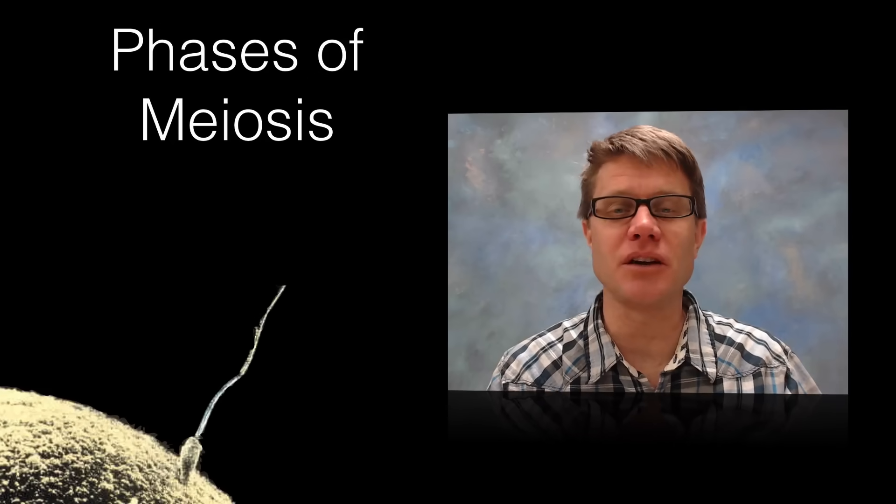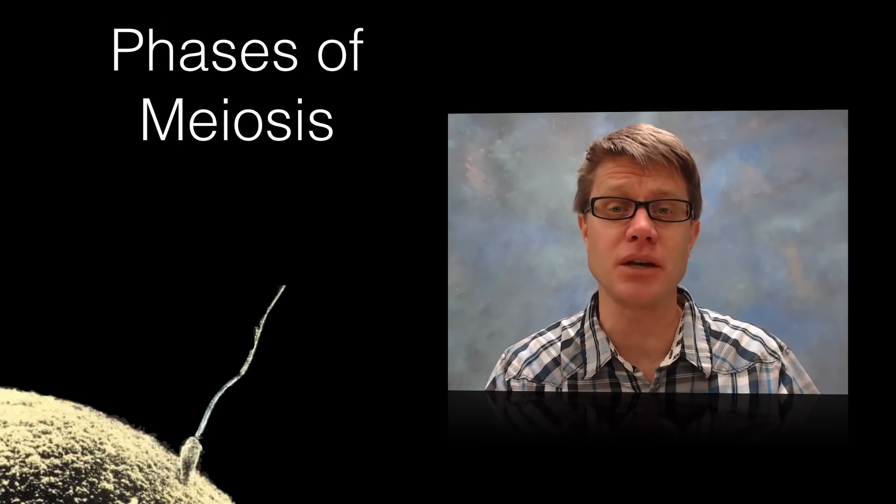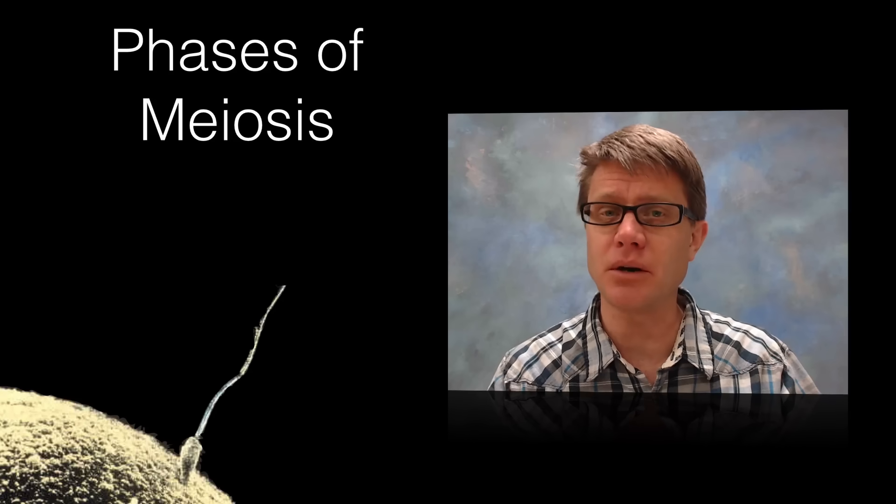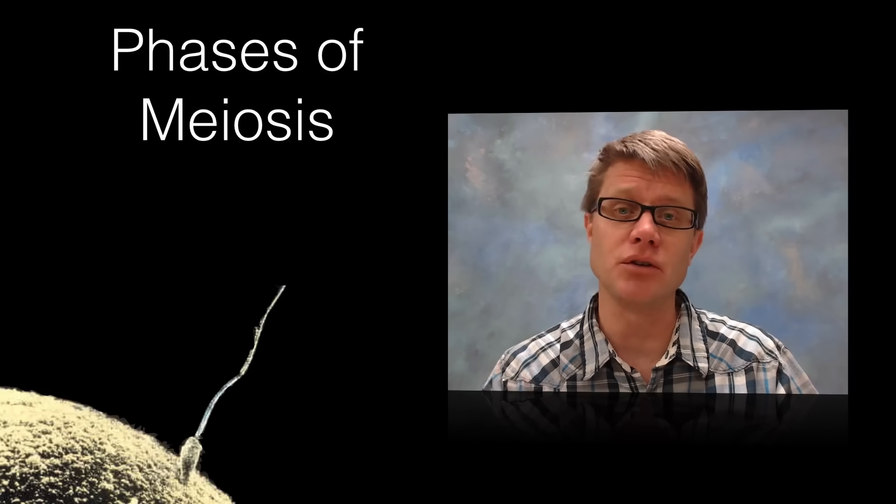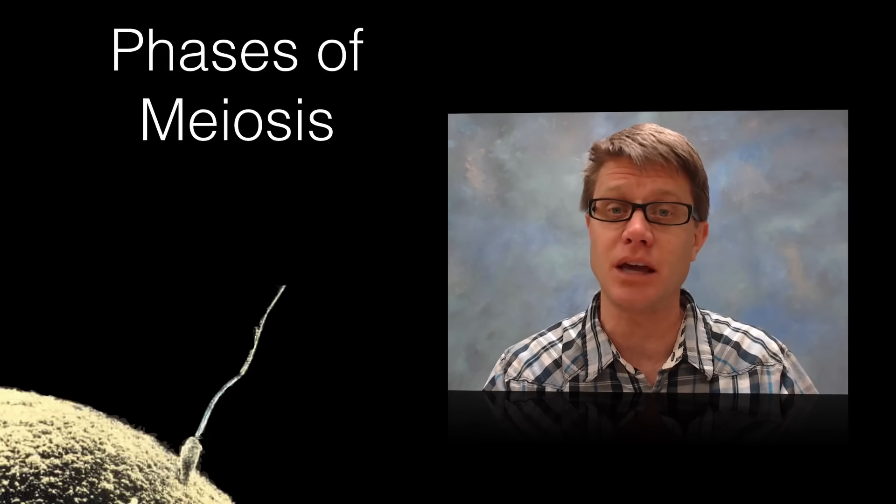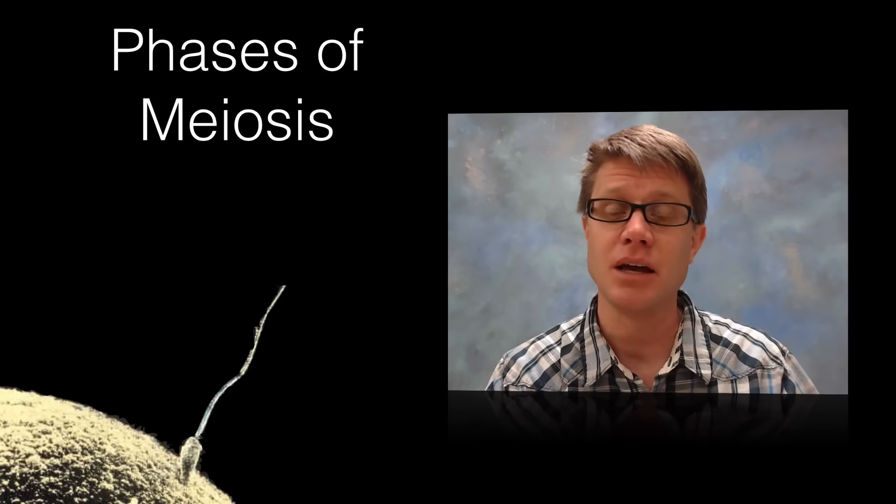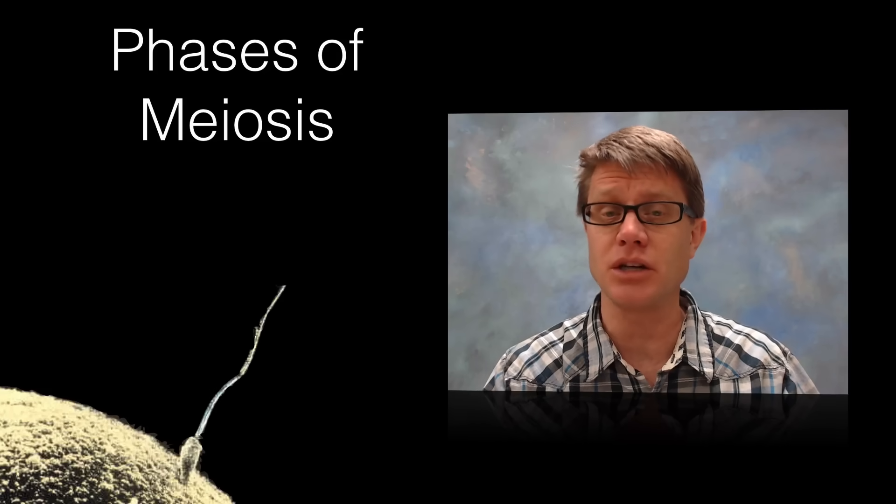Hi, it's Mr. Andersen and in this video I'm going to go through the phases of meiosis. Meiosis is a lot like mitosis. It starts with interphase. But remember the point of mitosis is to make two identical cells. In meiosis we're trying to make four genetically different cells because they're destined to be gametes, sperm and egg. That's the whole point of sex - we want the next generation to be different than the generation before.